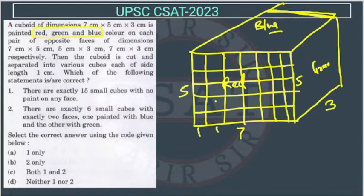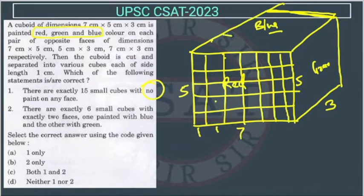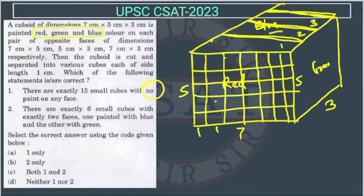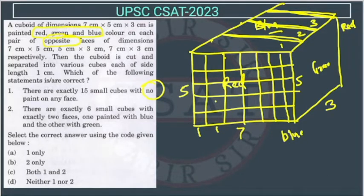Into various cubes each of size 1 centimeter. Which of the following statements are correct? There are exactly 15 small cubes with no paint on any face. So see here what will happen — this dimension is 3, so there will be 3 layers: one layer on this side, the middle layer, and the next one. The color is painted on opposite faces, so this is red and the back side is also red.